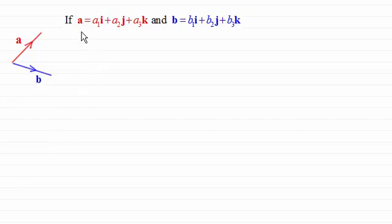If those two vectors, let's say they're a and b, and in three dimensions they've got components a₁, a₂, a₃ and for b components b₁, b₂ and b₃ in the i, j and k directions respectively.